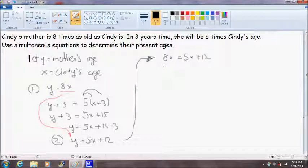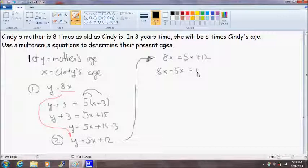Our next step is to get all the x's on one side and leave us just with numbers on the other side. So I am going to subtract 5x from both sides of this equation. So 8x minus 5x is equal to, so 5x minus 5x gives us 0 and we are left with 12. And 8x minus 5x will give us 3x. And finally, to solve just for x, I am going to divide both sides of this expression by 3. So 3x divided by 3 gives us x and 12 divided by 3 is equal to 4.